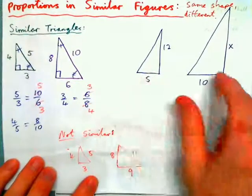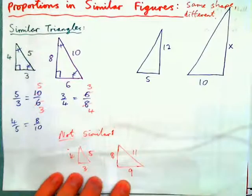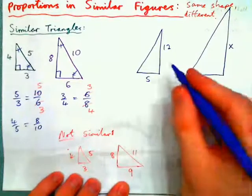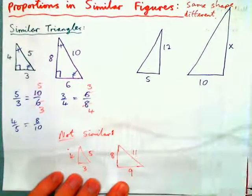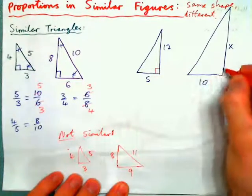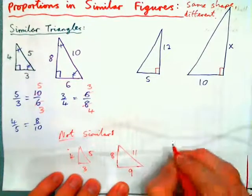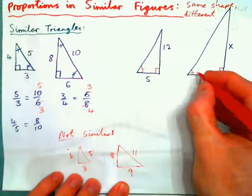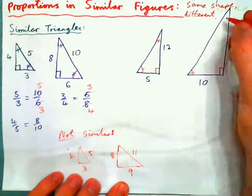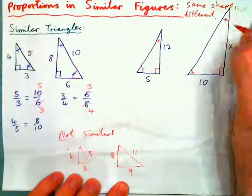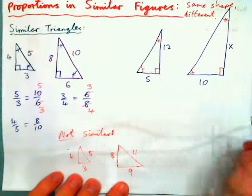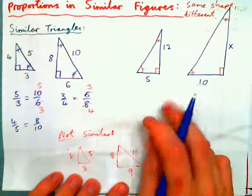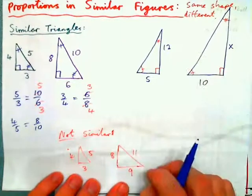Now, if we have two triangles and we are told they are of exactly the same shape — meaning they're both right angles, and this angle is the same as this angle, and this angle is the same size as this angle — if you're told they are definitely similar, then you can form a proportion with the lengths of the sides.